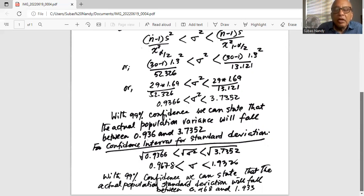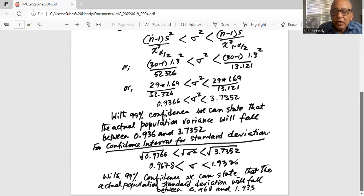We get square root of 0.9366 less than square root of sigma square less than square root of 3.7352, which works out to 0.9678 is the lower boundary for the 99 percent confidence interval for the standard deviation and the upper boundary for the 99 percent confidence interval for the standard deviation is 1.933.